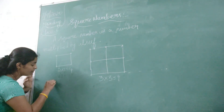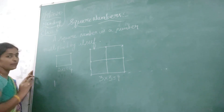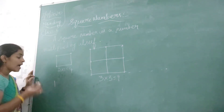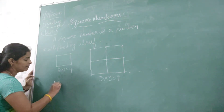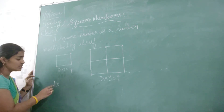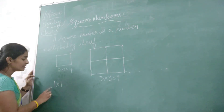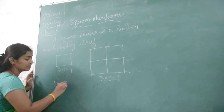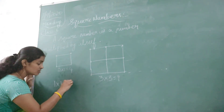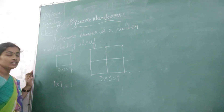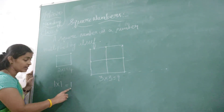Suppose if I am taking the number 1. I am multiplying with the same number. That is 1 into 1 is 1. So I got the value 1. I will get only 1.